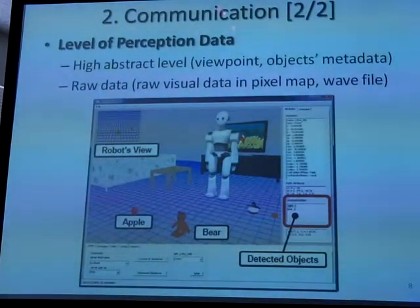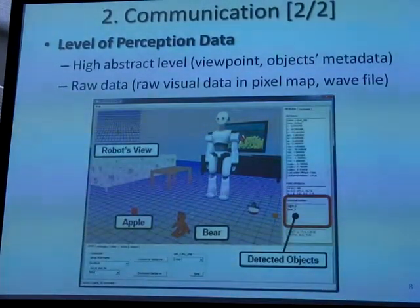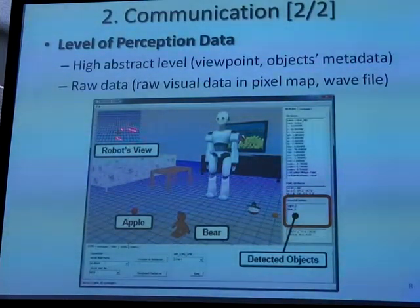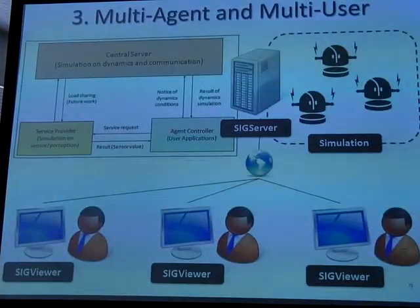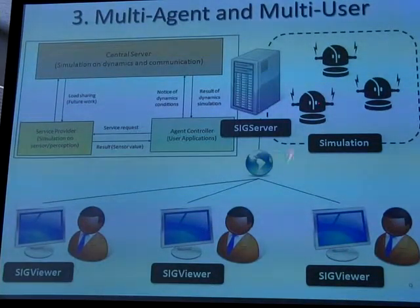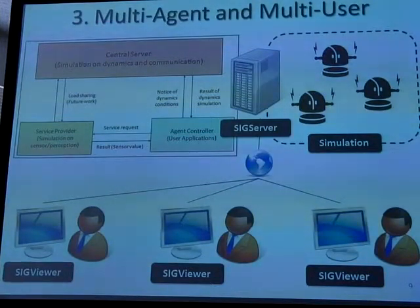We support different levels of perception data for different users of SigVersch. Some are non-technical — they can view the robot's vision as a display. But some developers or researchers don't want pixel data; they want real information like the metadata of an object or its object ID. Some people want the raw data. We can provide both to different levels of developer. We have a unique architecture for communication: a server unit handles all calculation, and client units called SigViewers receive the results. Multiple client terminals can connect and participate in the same simulation, enabling both multi-agent and multi-user scenarios.